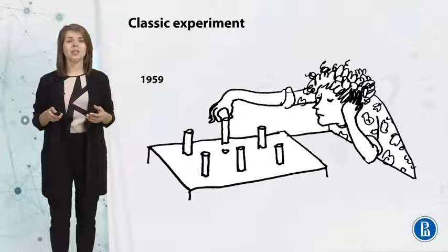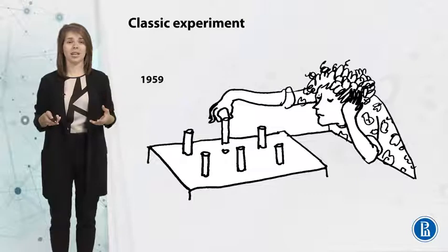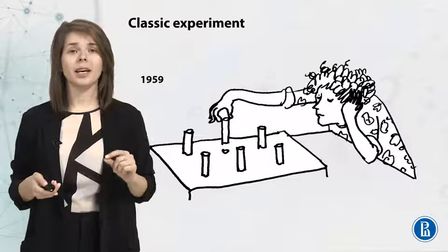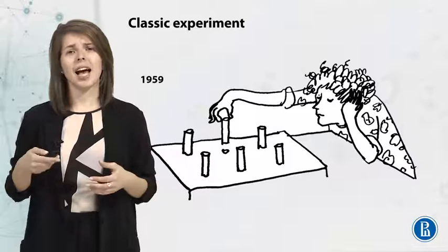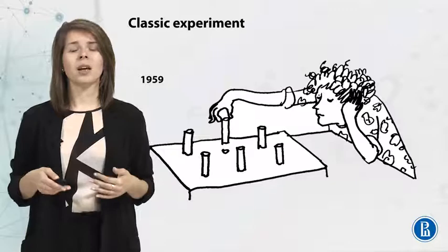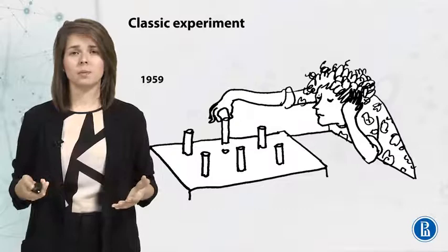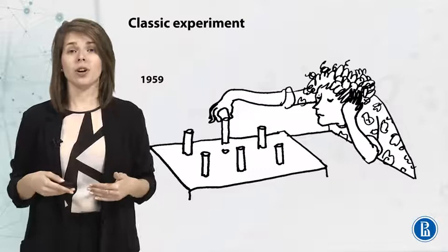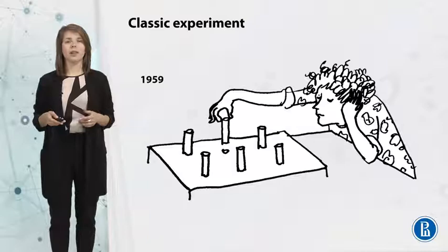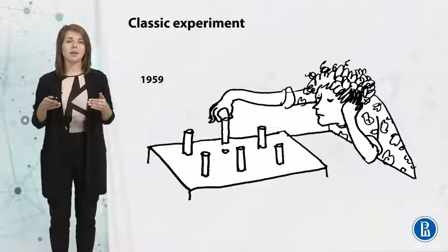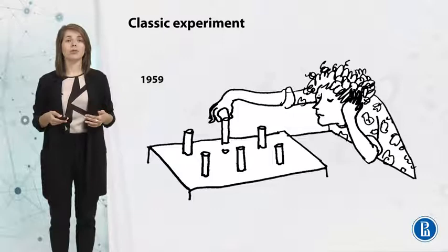Festinger concluded there must be some stimulus influencing the difference in responses to the exact same task — and this was called cognitive dissonance. The one-dollar group suffered from cognitive dissonance: they had to lie, which they disliked, but did so for very little money. The other groups had justification. The control group was honest and didn't lie. The twenty-dollar group lied for money, which felt acceptable. So the two confronting cognitions caused the one-dollar group to rate the task slightly higher.